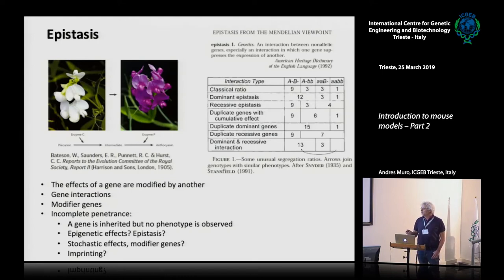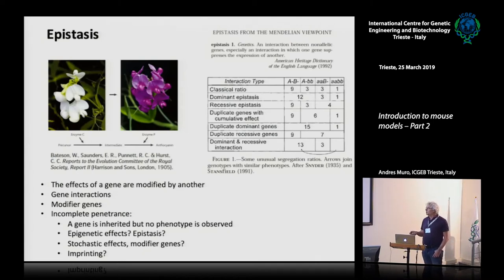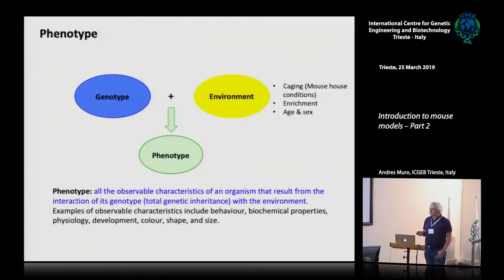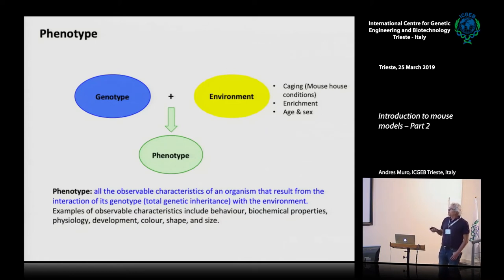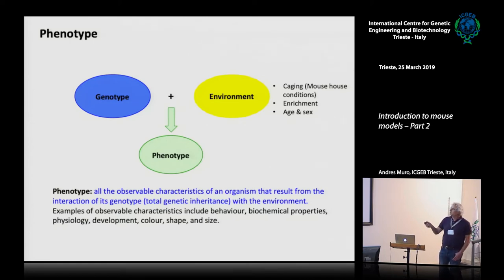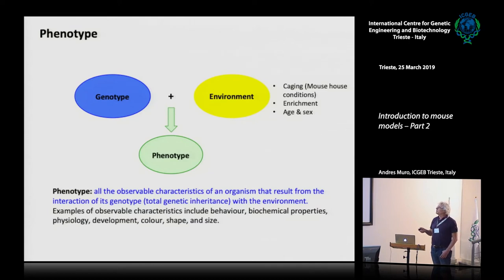We also have genes with incomplete penetrance. In some cases, a gene could be inherited but the phenotype is not observed — this could be due to epistasis, epigenetic effects, imprinting, or different reasons. The key point is that phenotype is the interaction between genotype and environment: different genotypes can result in different phenotypes, and the genotype is also modified by the environment.